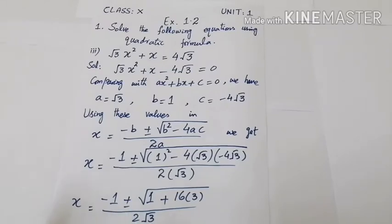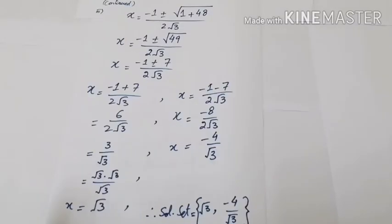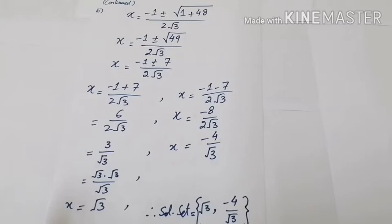Next step: x = (−1 ± √(1 + 48)) / (2√3), which gives x = (−1 ± √49) / (2√3). The square root of 49 is 7, so we get x = (−1 ± 7) / (2√3).